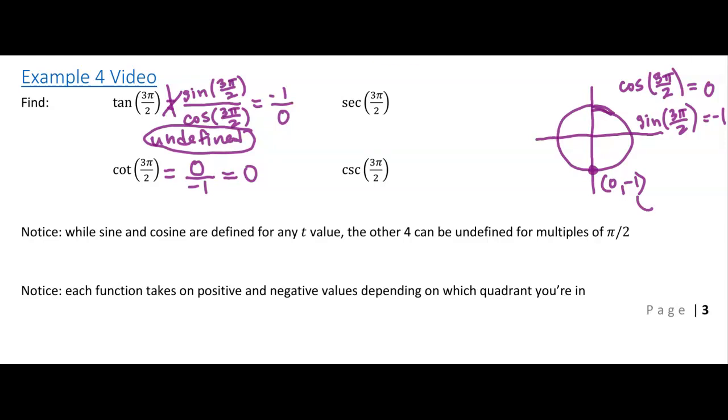Let's do secant 3 pi over 2. Remember that secant is 1 over cosine. And cosine is our x value. So x equals 0. So this is going to be 1 over 0, which is another undefined.